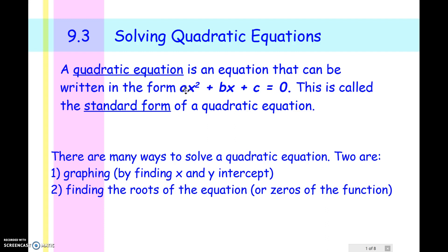Here's standard form: ax squared plus bx plus c equals 0. The difference here is that now it equals 0 as opposed to y or f of x.